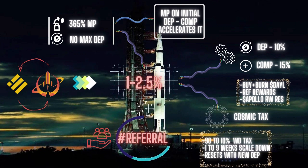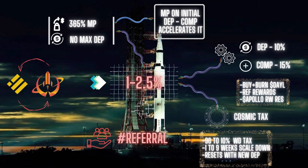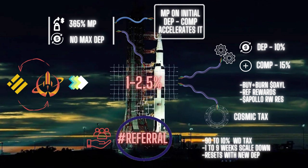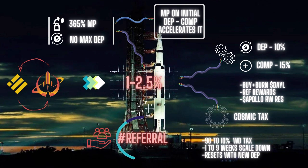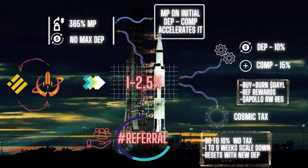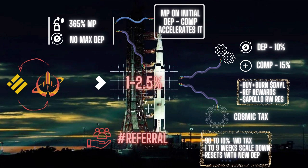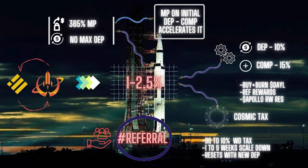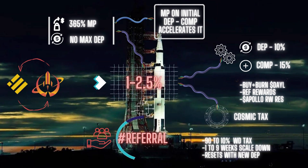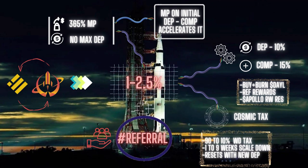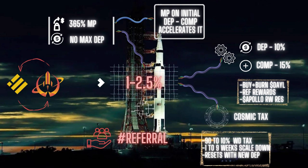On the tokenomics side, you have your basics: taxes on deposits, compounds, and transfers all go into the deposit pool. There's also a referral that gets a percentage of whatever you deposit. You can omit a referral and just enter the staking platform without one, but if you choose to use a referral, they get fifty percent of the deposit tax, which is five percent of ten percent. Upon compounding there's also a tax, but the referral reward only applies to the initial deposit — when you compound, the referral gets nothing.